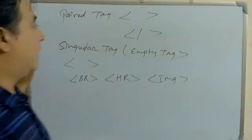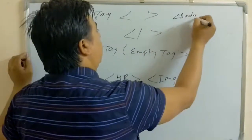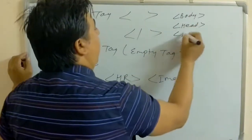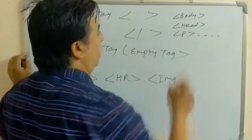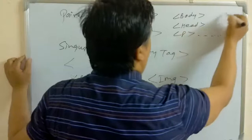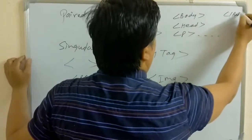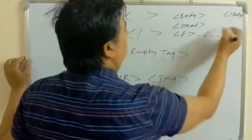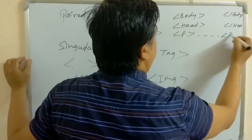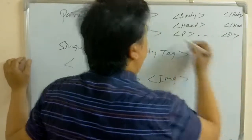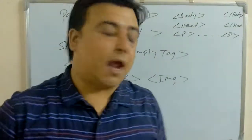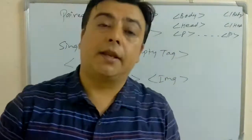The pair tag. Body itself is a pair tag. Head is a pair tag. Paragraph is a pair tag. We have to close the body, close the head. Like that, P for paragraph tag. These are known as the pair tags. There are many pair tags used in HTML.